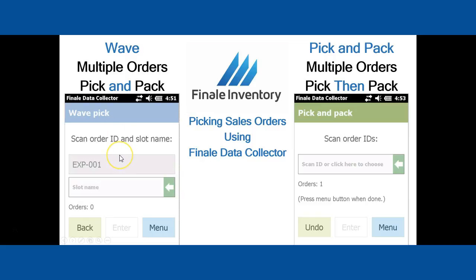Wave picking starts from the premise that you have a stack of packing slips — say ten packing slips — and you want to make one trip in the warehouse to pick everything on those ten slips. You would scan each packing slip, since each one represents a different order, and associate each order with a slot. A slot is nothing more than a bin, storage bucket, or place on a cart — cardboard boxes or bins that separate each order. As you go through the warehouse and pick, each order gets its own bin, and you put each item into the correct bin. The software will then direct you to most efficiently pick all items for all those orders in your wave.